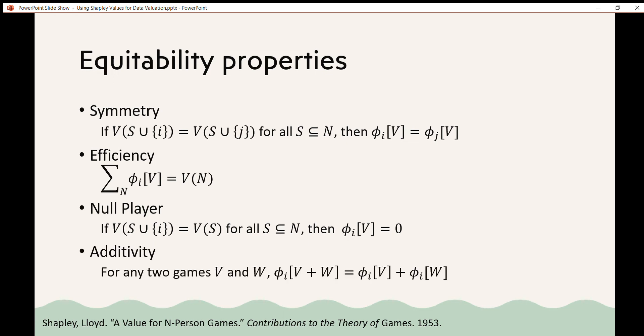The last property I'm going to talk about is additivity, which says for any two games v and w, phi i of the game v plus w should equal phi i of the game v plus phi i of the game w.